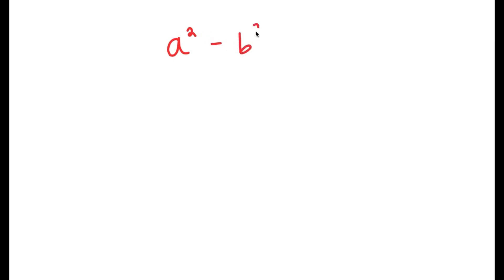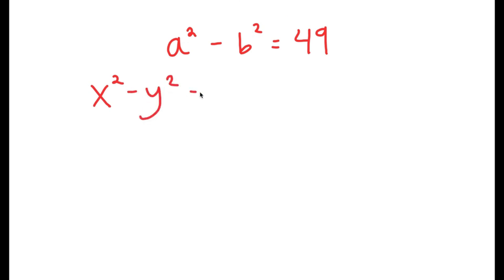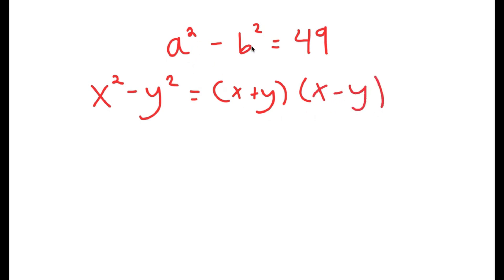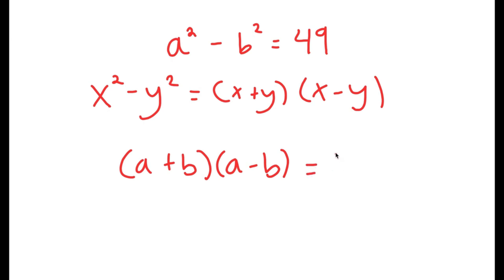In this video, I'm going to solve the equation a squared minus b squared is equal to 49. To solve this, I'm going to use the property that states that if I have something in the form x squared minus y squared, this is equal to (x plus y)(x minus y). In this case, a is x and b is y, so this turns into (a plus b)(a minus b) is equal to 49.